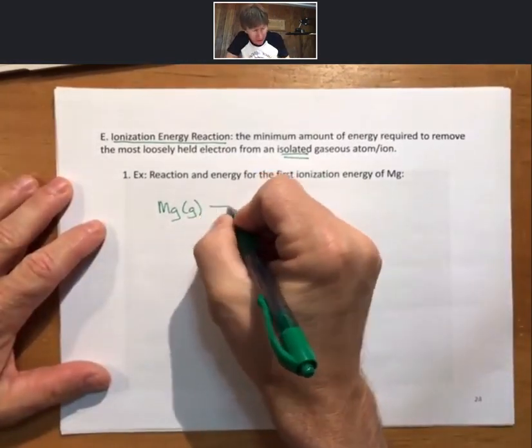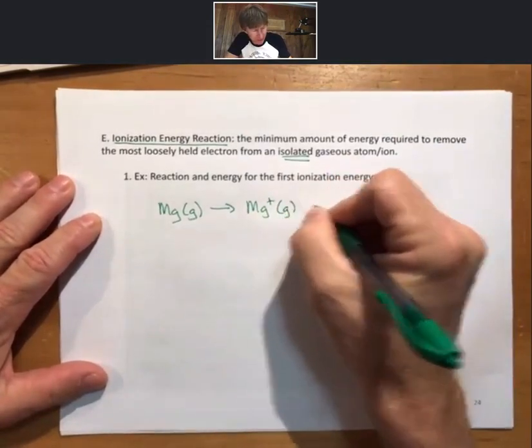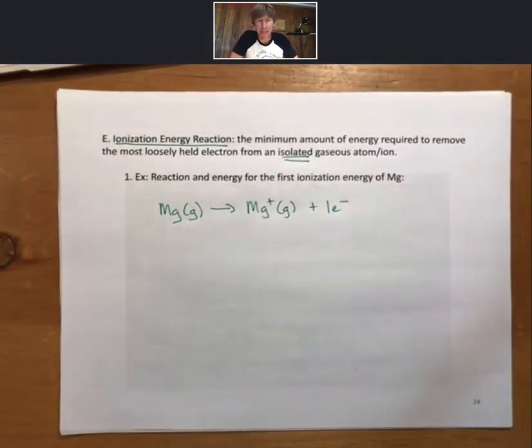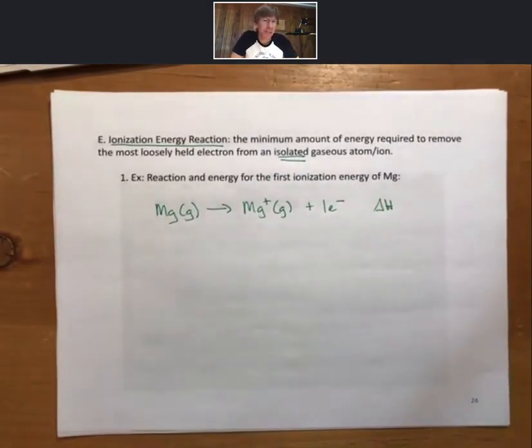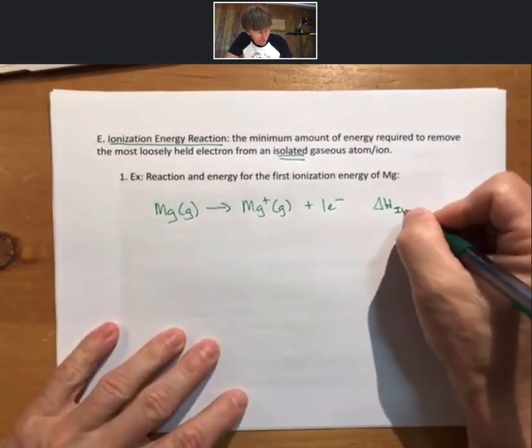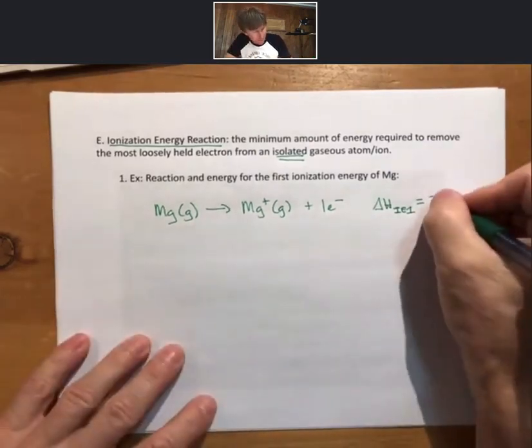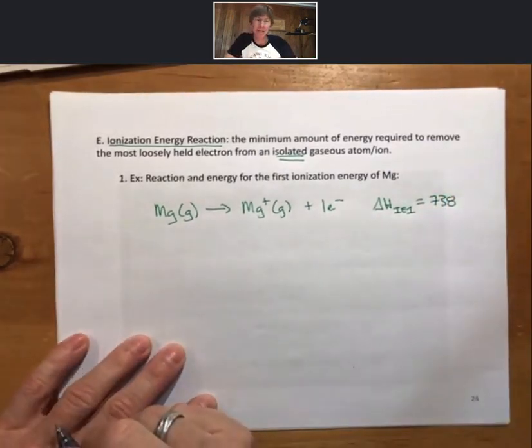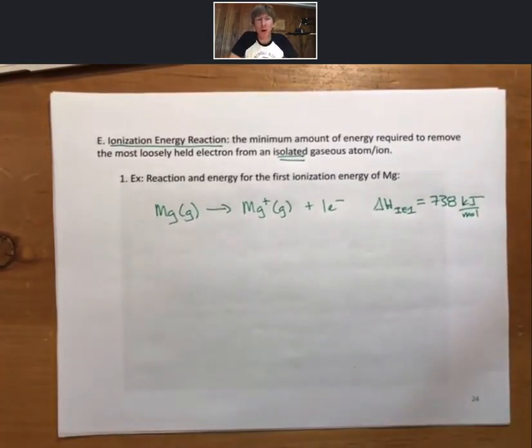Anyway, back to the reaction. Magnesium gas loses one electron to become magnesium plus gas. And that one electron is a product. Now, this is a reaction. It has a delta H of reaction. And I'm going to call this delta H IE1 for ionization energy 1. The ionization energy, or the delta H, the energy associated with this reaction, 738 kilojoules per mole. That is an endothermic process. That means to remove an electron from magnesium, and most things, including metals and other phases, requires energy. This is endothermic.